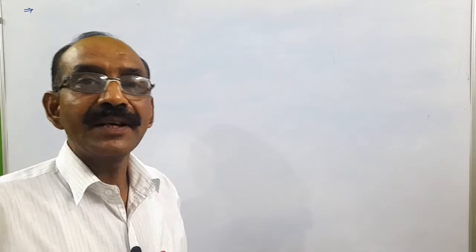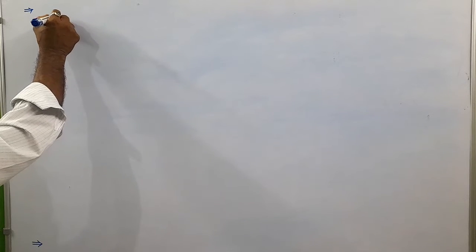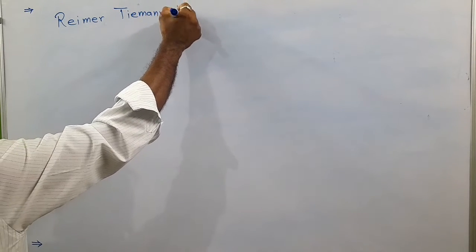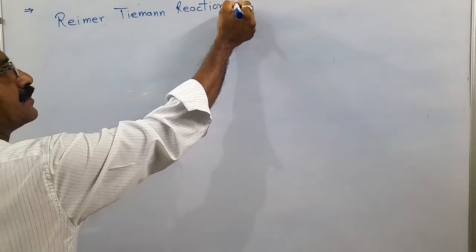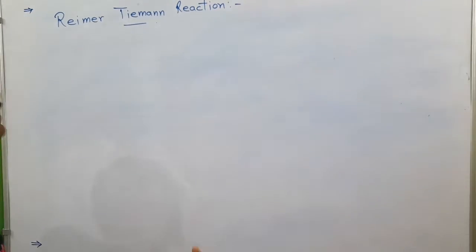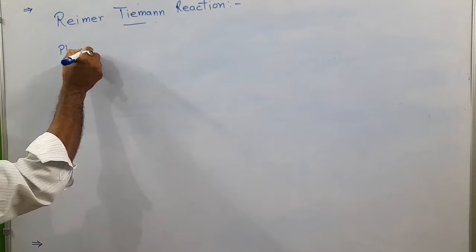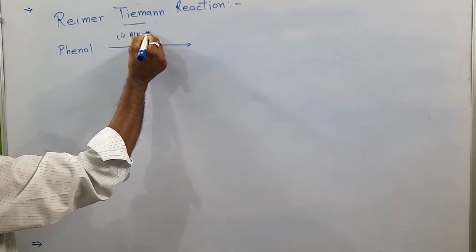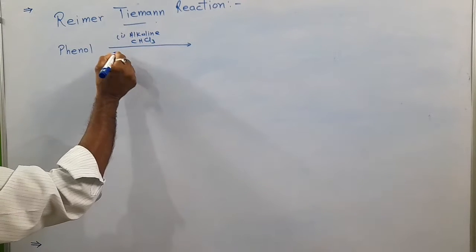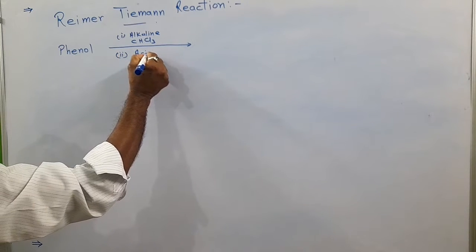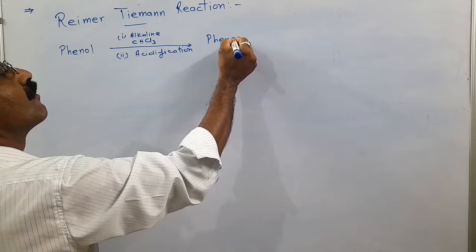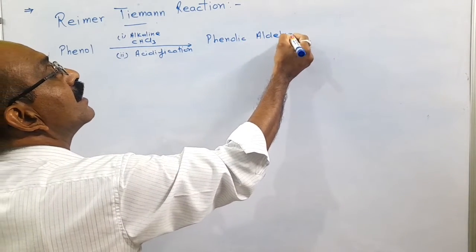Hello students. Today we will discuss the next important reaction from phenol, and the reaction is the Reimer-Tiemann reaction. In the Reimer-Tiemann reaction, when phenol is treated with alkaline chloroform followed by acidification, this gives a phenolic aldehyde.